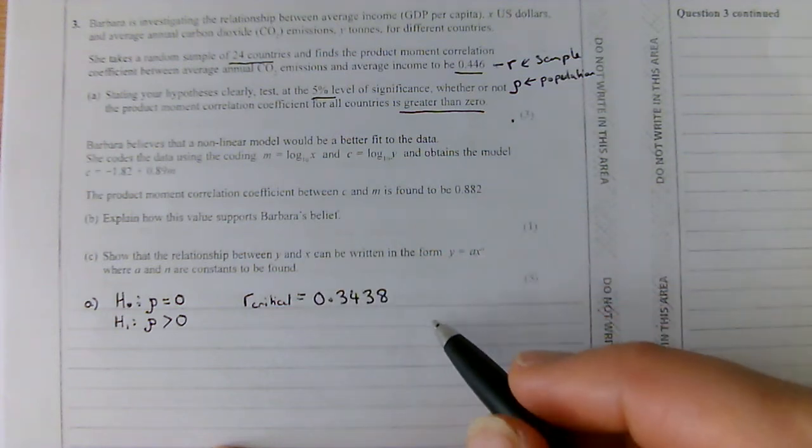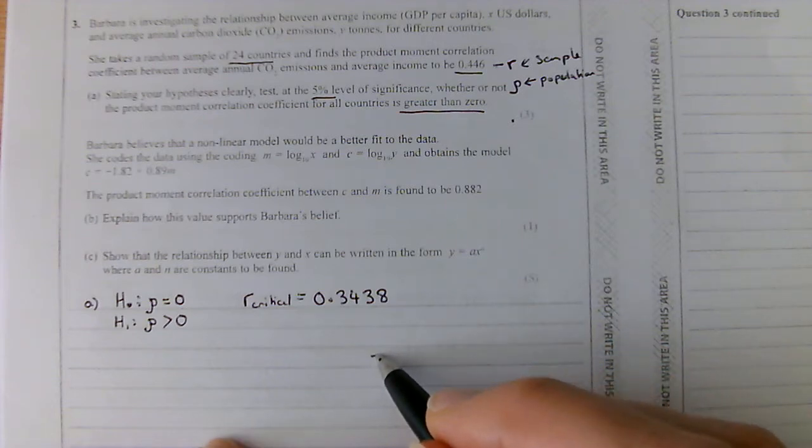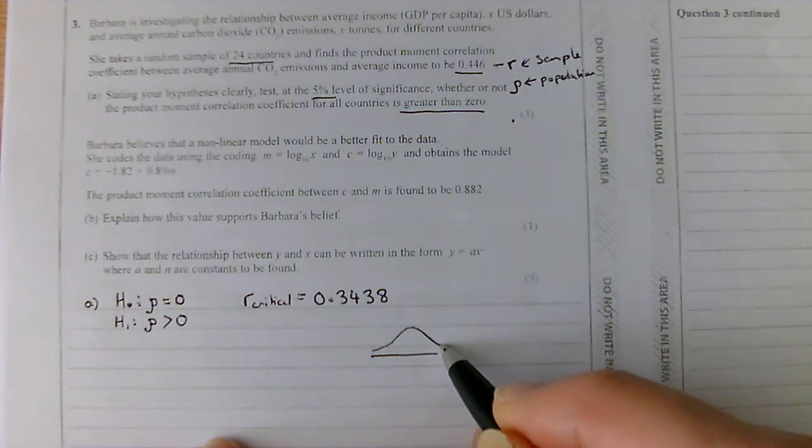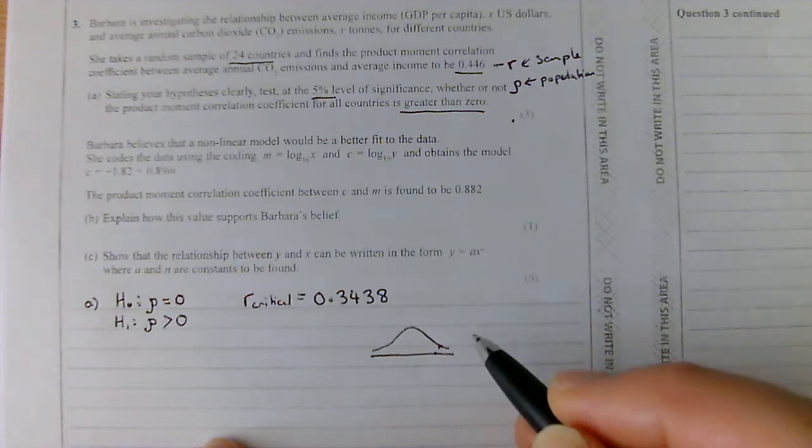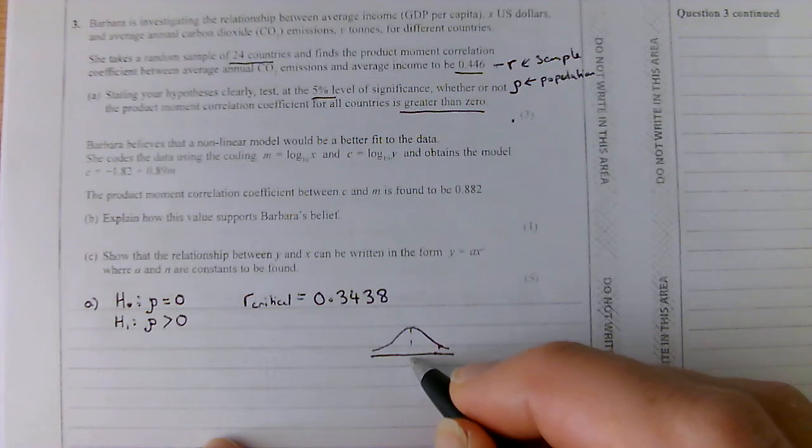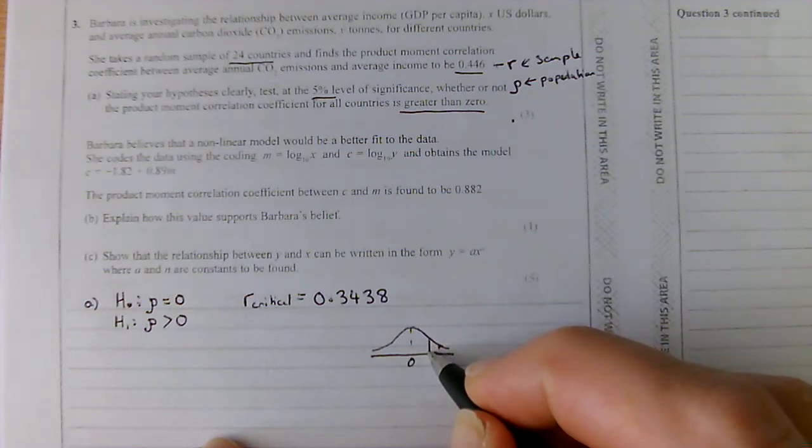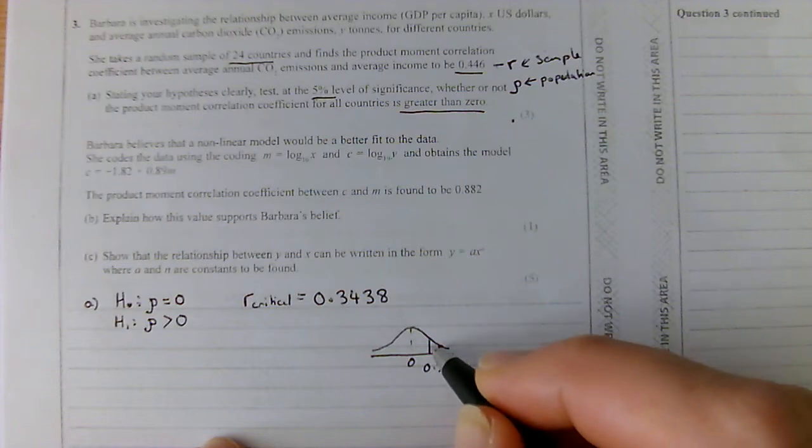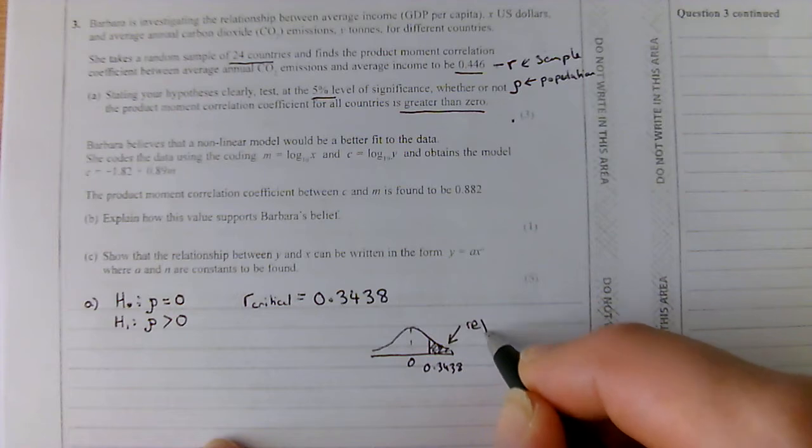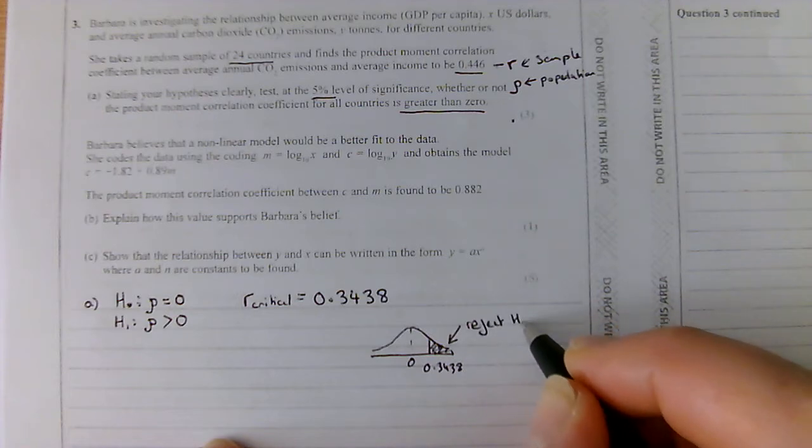Let's just draw a quick diagram. You don't need to do this, but it just helps with our understanding. We're saying that R is centred around 0. What this is telling us, there's my 0, is that if you're 0.3438, if you've got a value which is greater than 3438, so everything here, you would reject H0.